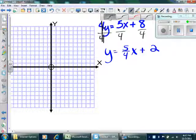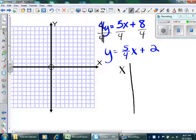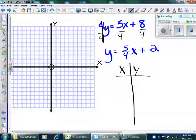8 over 4 will turn into 2. I'm going to go ahead and make my t-table. This time, I'm going to pick 0 for x. I really like to pick 0 for x. 0 for x is almost always a really good choice, especially in Algebra 1.